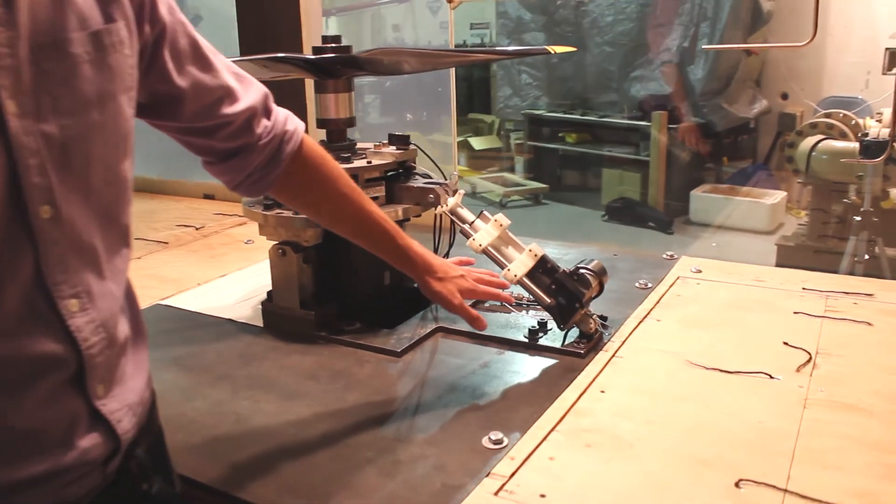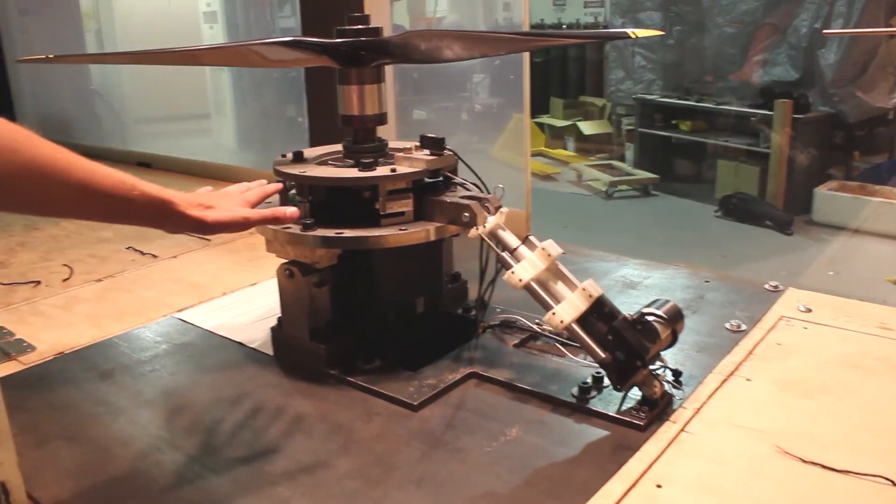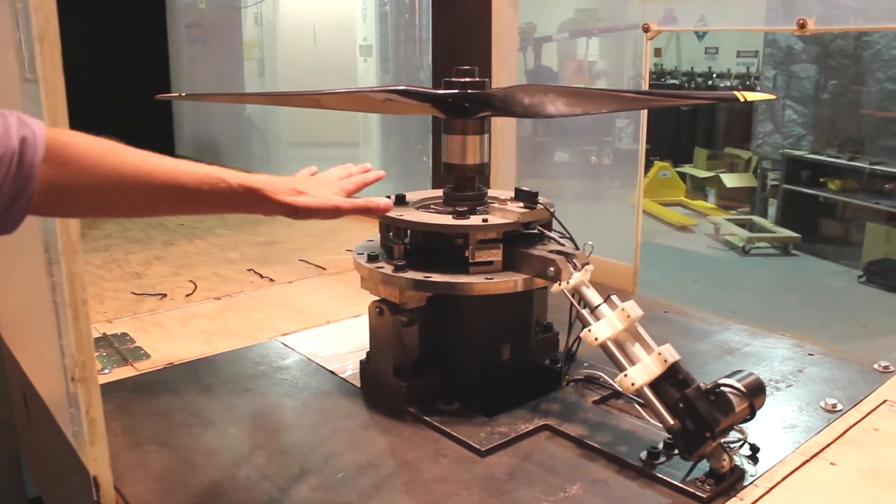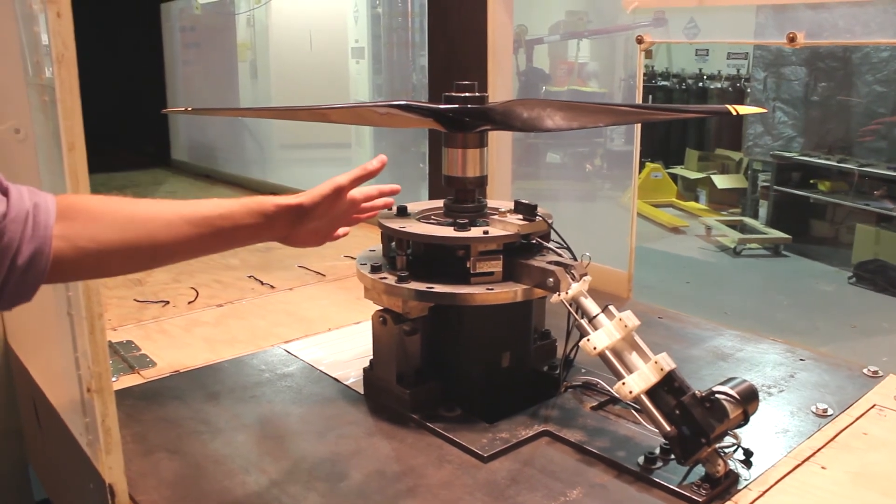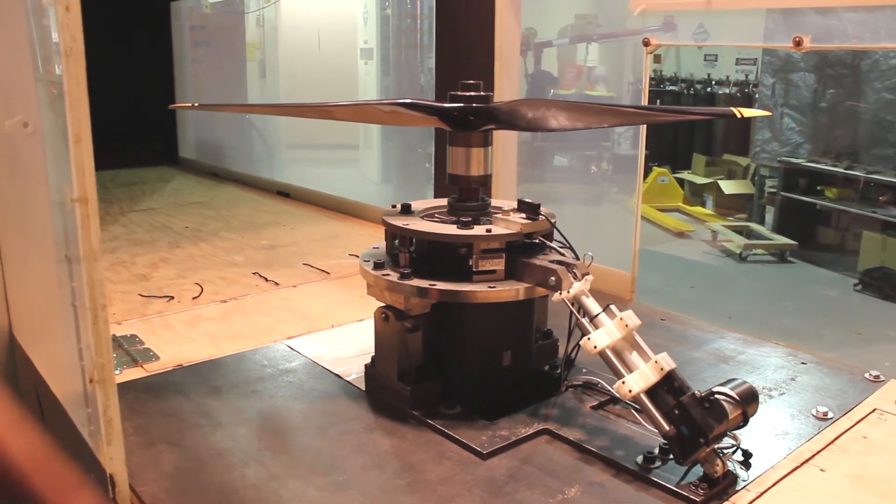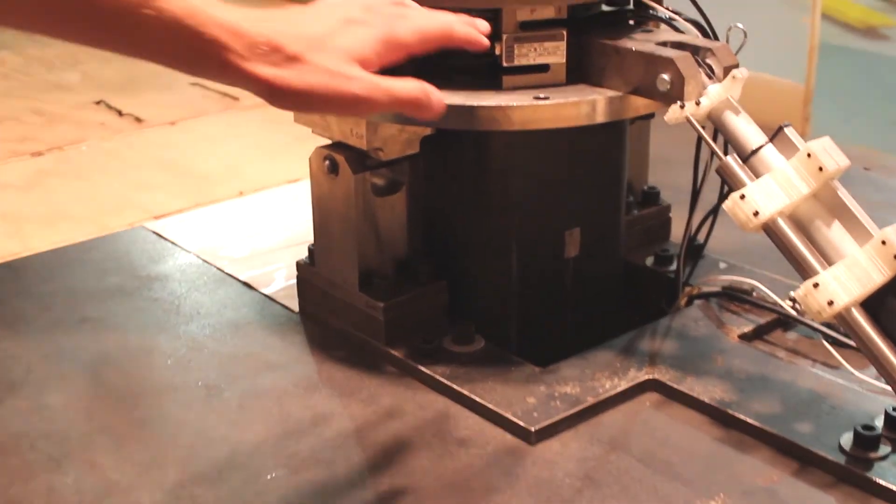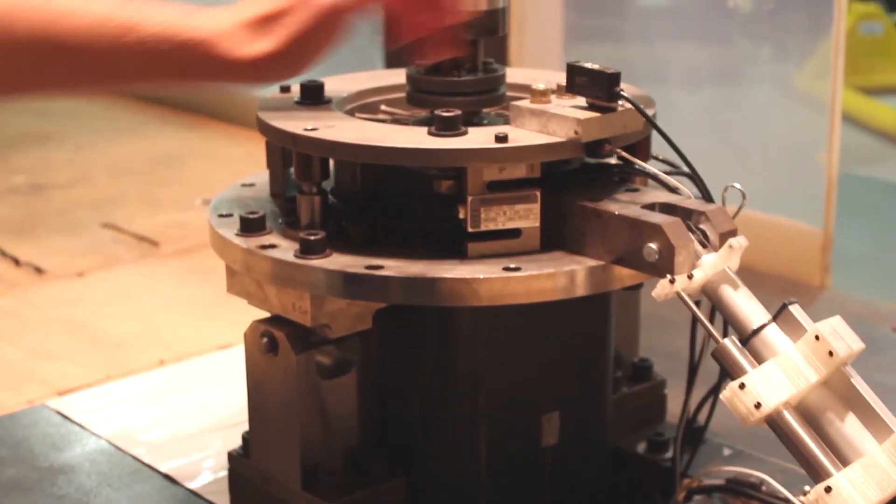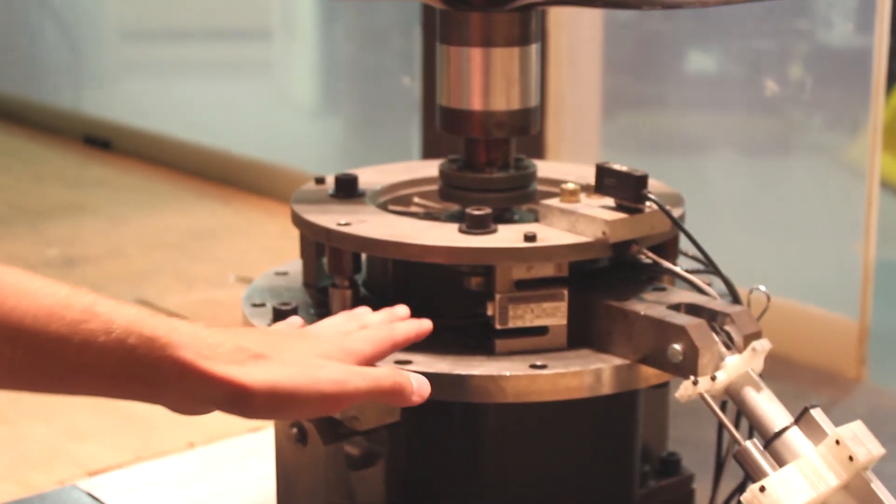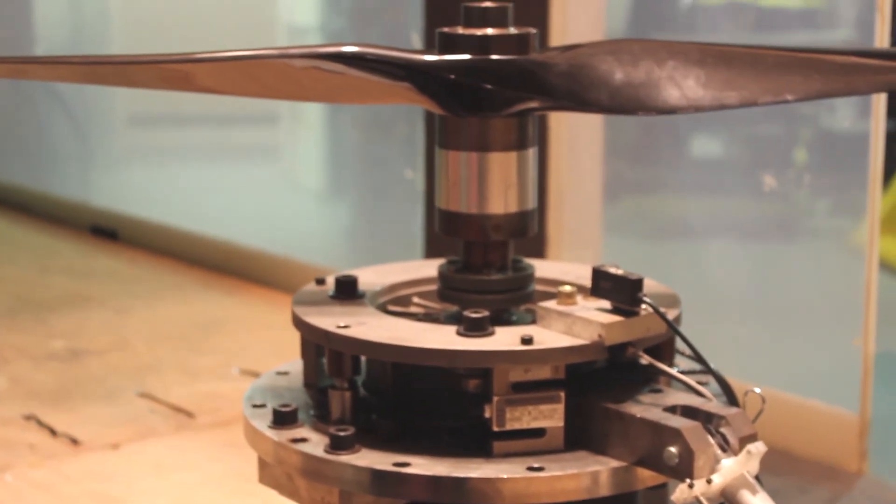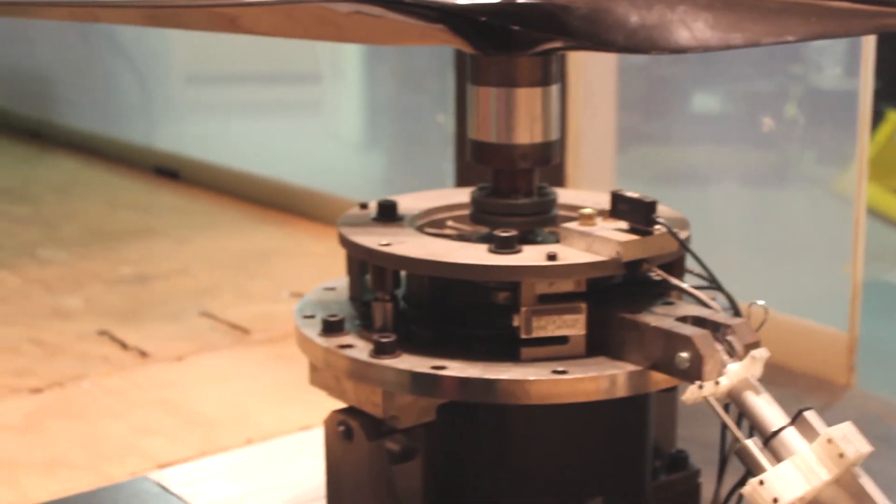At the back here we have a linear actuator that allows us to tilt the rotor disc. Right now it's in its hover configuration. We can also tilt it more forward to simulate forward flight. Below we have the motor that turns the rotor. Here we have three force sensors that allow us to measure force and moments of the rotor disc during testing.